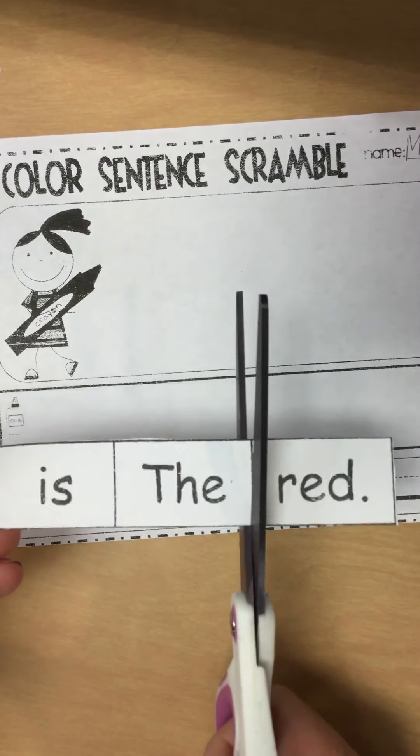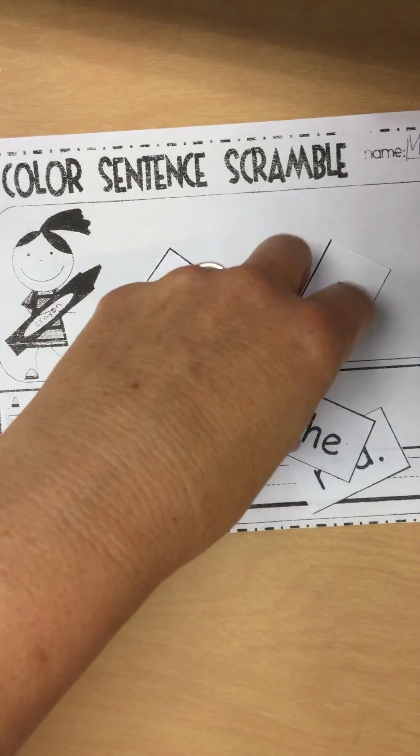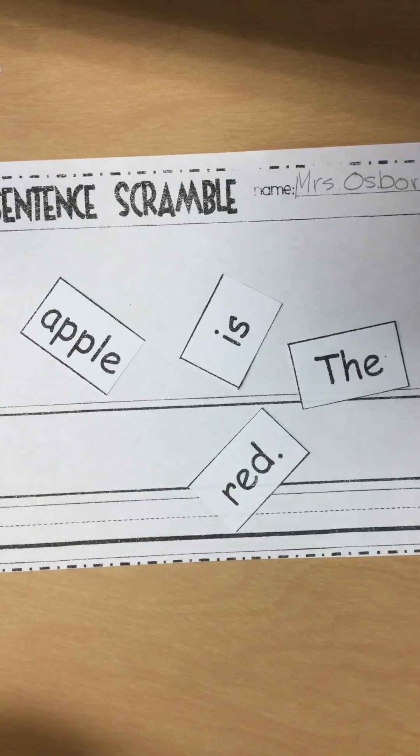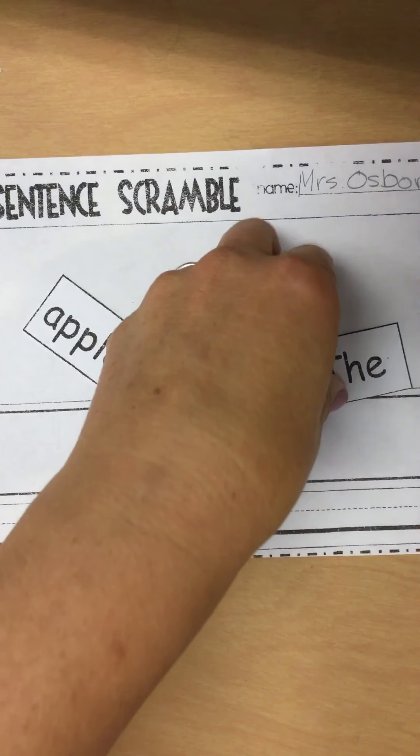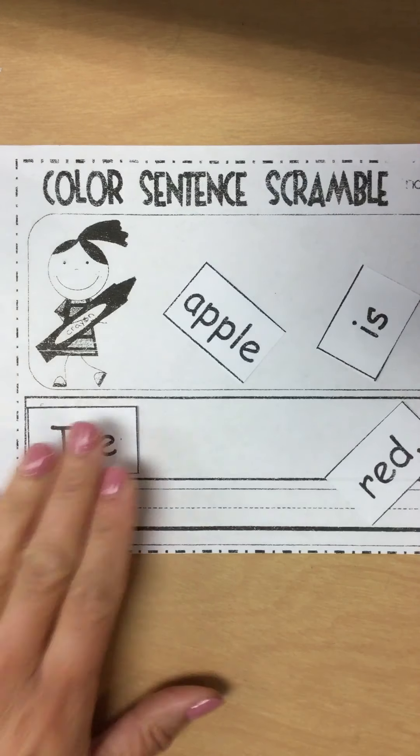And then I am cutting my words apart and I need to figure out what makes sense. So what does the sentence begin with? A capital letter. Where do you see a capital letter? The. Okay, so I'm going to take my word the. I'm going to use my glue stick. These are little bitty pieces of paper and I'm going to put my word the all the way here at the beginning.